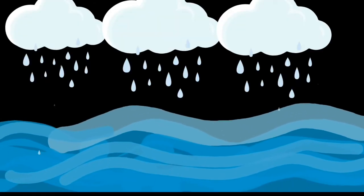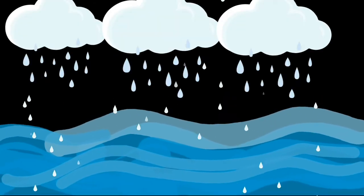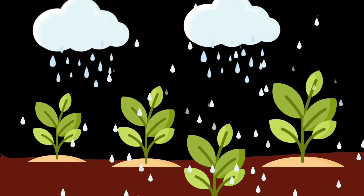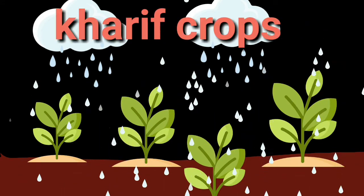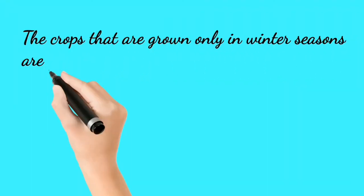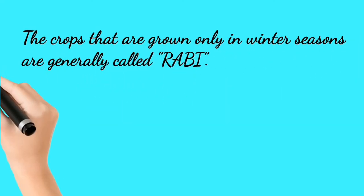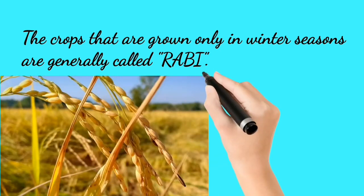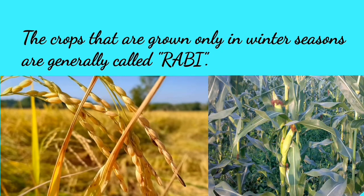Water is essential for growing crops. Generally in the rainy season, ponds and wells are filled with water. Hence, farmers grow varieties of crops in this season. The crops which grow in the rainy season are termed as Kharif crops. The crops that are grown only in winter season are generally called Rabi crops. Examples include wheat and maize.